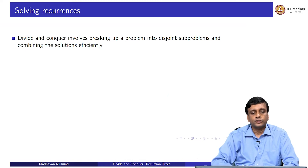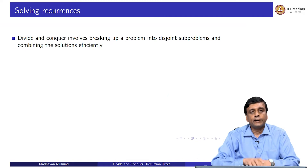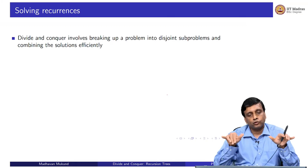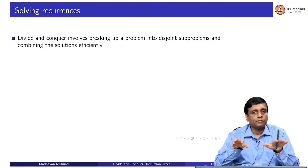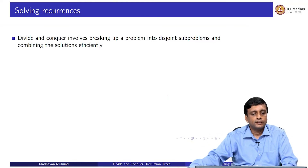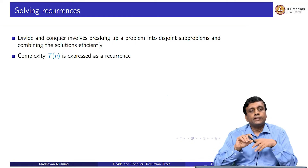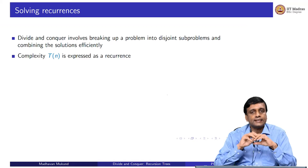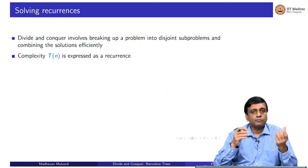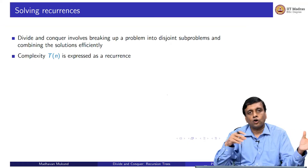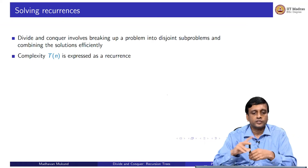A divide and conquer solution requires us to break up the problem into disjoint subparts — smaller subproblems which do not interact with each other — solve them recursively, and then combine these subparts. The complexity of the original problem of input size n will be a recurrence, depending on the complexity of smaller subproblems plus the extra cost of splitting and combining.